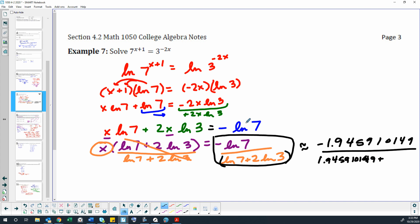Okay, so then we divide this out. I'm actually going to go ahead and type the whole thing in my calculator at once now: negative natural log 7 in parenthesis, divide, open parenthesis, natural log 7, close parenthesis, plus 2 natural log 3 in parentheses.